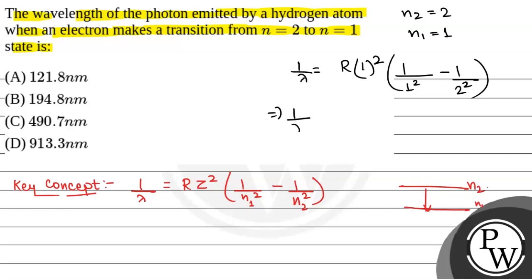From here, 1 by lambda will be equal to R into 1 minus 1 by 4, that is equal to 3 by 4 R.